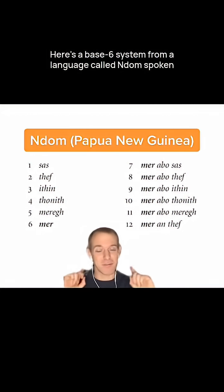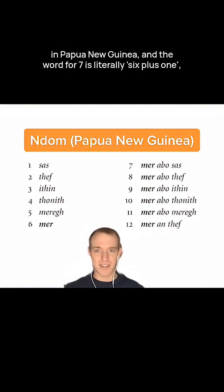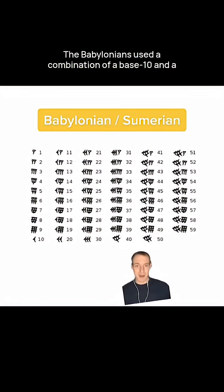Here's a base 6 system from a language called Ndôme, spoken in Papua New Guinea. The word for 7 is literally 6 plus 1, and 12 is literally 6 times 2.